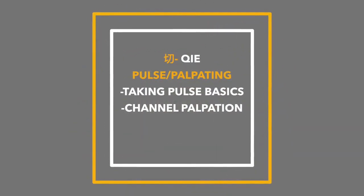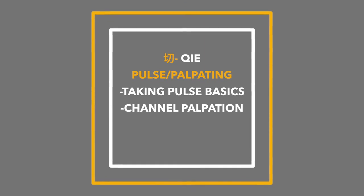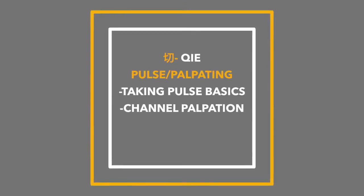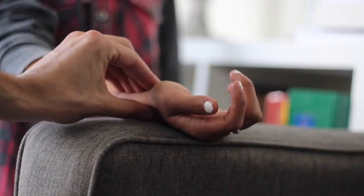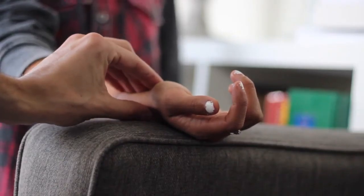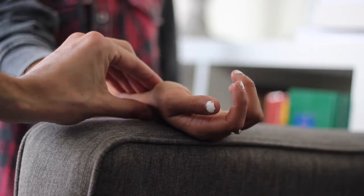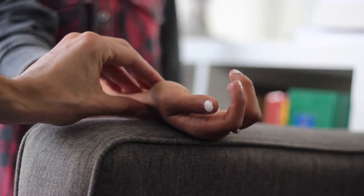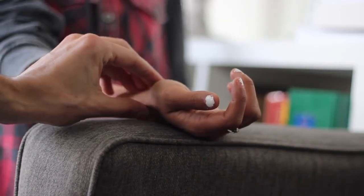The last skill, qie, is palpation. The most famous form of qie is pulse diagnosis and channel palpation. In pulse diagnosis, the physician is feeling three areas of the radial artery — we're feeling not only the strength, depth, and width of the pulse, but also each individual position. The first position is known as the cun, the second is the guan, and the third is the qiu. These each correlate to certain organs in the person's body.